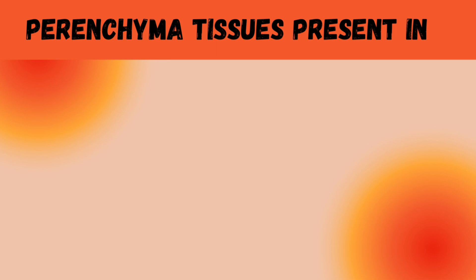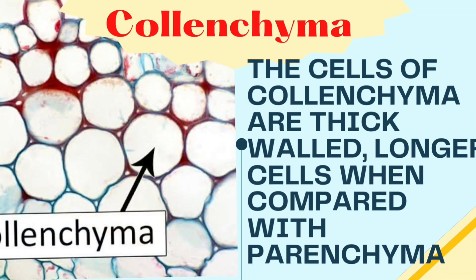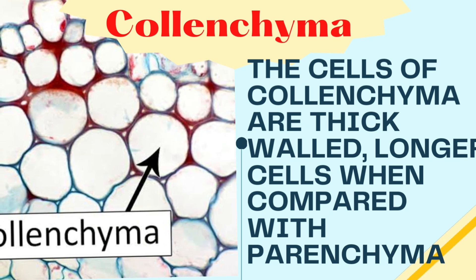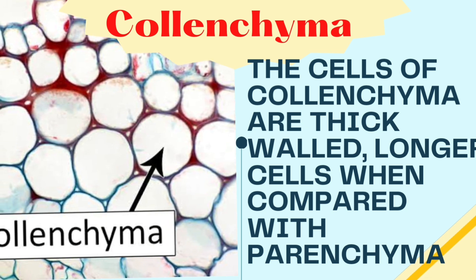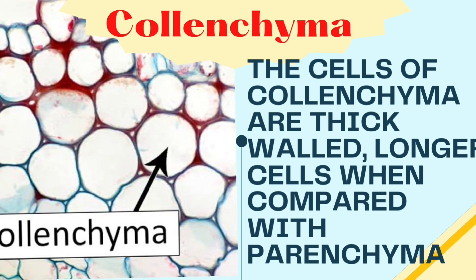The second type of ground tissue is collenchyma. Collenchyma tissues have thick-walled, longer cells compared with parenchyma.